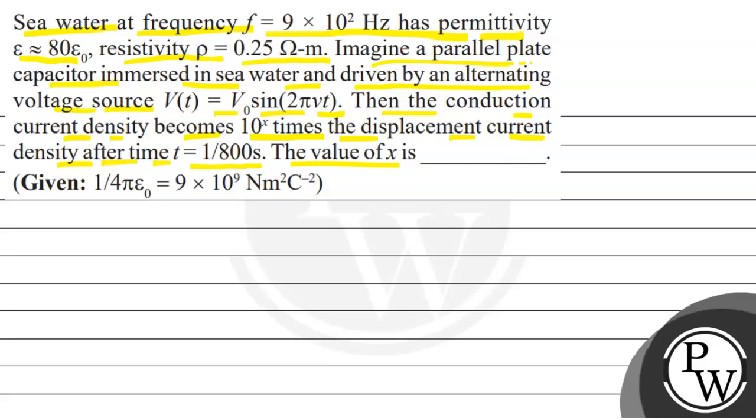Let's look at the concept. First of all, the conduction current density Jc ki value pata hona chahiye, so obviously it is equals to E by rho. And since E ka value kitna hota, V by d hota hai electric field ka, therefore we can write that Jc equals to V upon d into rho.